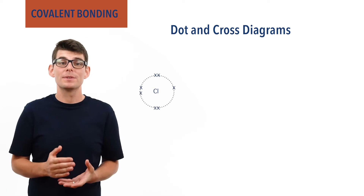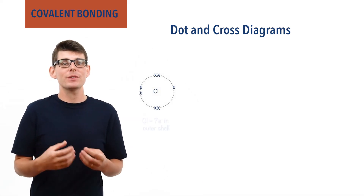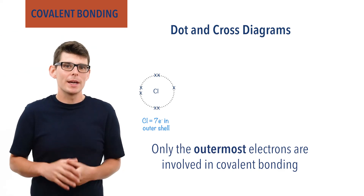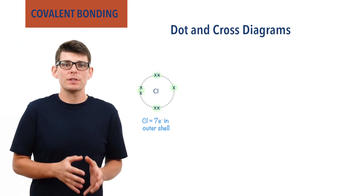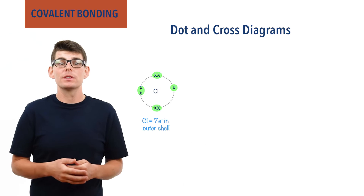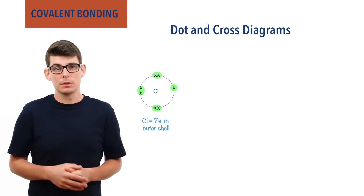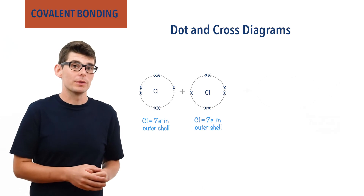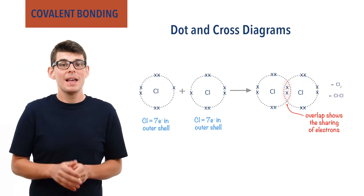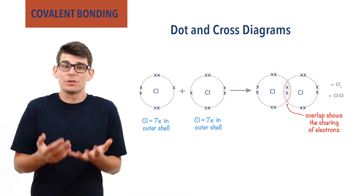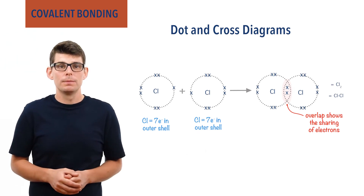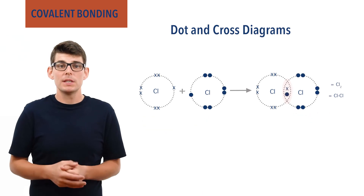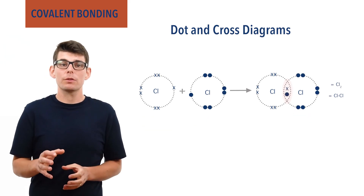For example, chlorine is a group seven element. It has a valency of seven, meaning it has seven electrons in its outer shell. It is only the outer electrons of an atom that are of interest in bonding, as the inner electrons are tucked away and inaccessible. We can show these as crosses around the atom, drawn in pairs, as electrons exist in orbitals and each orbital can hold one pair. Just like with hydrogen atoms, two chlorine atoms will share a pair of electrons as their two half-filled orbitals overlap. One electron comes from each chlorine atom. To show where the electrons have come from, we draw electrons on the second chlorine atom with dots, so we can easily see that one electron has come from each atom.